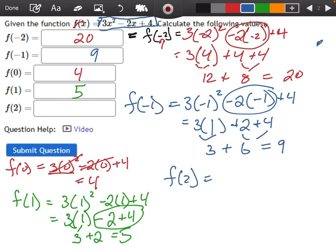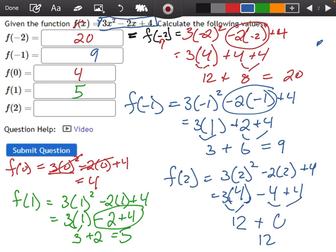And then one last one, f of 2. So 3, 2 squared, minus 2 times 2, plus 4. 3, let's see, 2 squared is, oops, 4. Let's fix that. Okay, that's 4. Minus 4, plus 4. Okay, 3 times 4 is 12. This minus 4 and plus 4 is going to give us a 0, and 12 plus 0 is still 12.